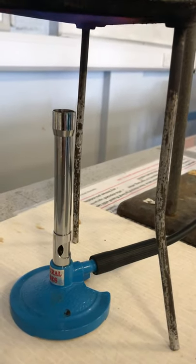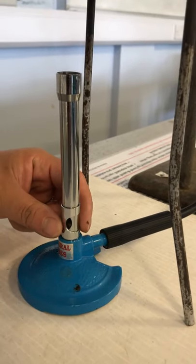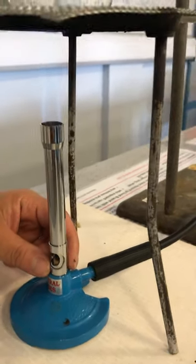After a minute, fully open the air hole of the Bunsen burner to speed up the heating process.